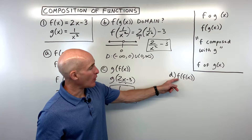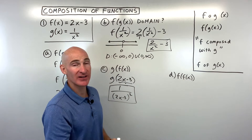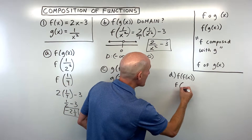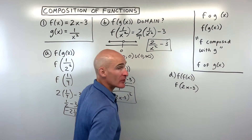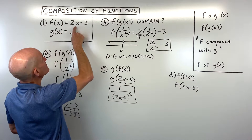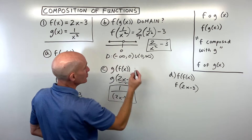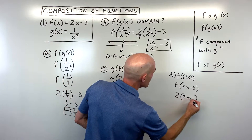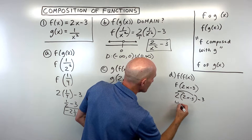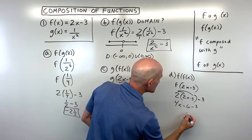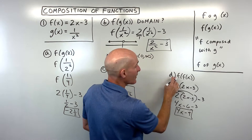For f of f of x, we're putting the f function back into itself. f of x is equal to 2x minus 3. Whatever's in parentheses goes in place of x on the right, so we get 2 times the quantity 2x minus 3, minus 3. Distributing gives us 4x minus 6 minus 3, which is 4x minus 9. That's f of f of x.